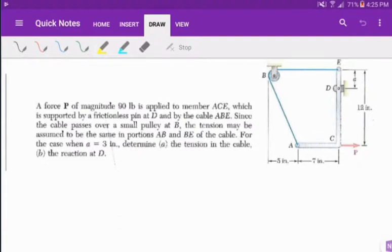A force P of magnitude 90 pounds is applied to member ACE, which is supported by a frictionless pin at D and by the cable ABE. Since the cable passes over a small pulley, we can assume that the tension is the same in AB and BE. If we have a distance of A equals 3 inches, we need to find the reactions at D and our tension in the cable.